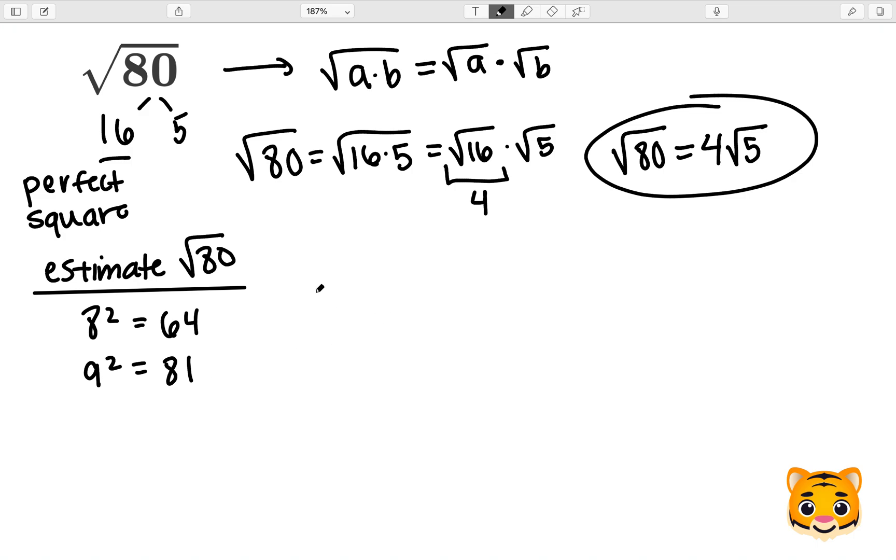We can therefore write the following inequality. The square root of 64 will be less than the square root of 80, which will be less than the square root of 81. Because 8 squared is 64, the square root of 64 will be 8. And then because 9 squared is 81, the square root of 81 will be 9.